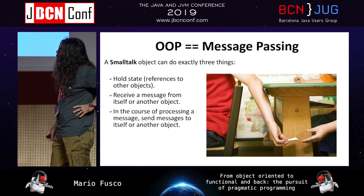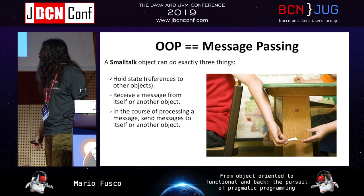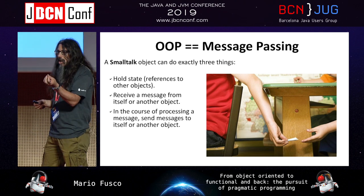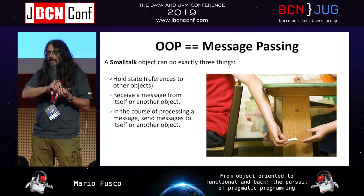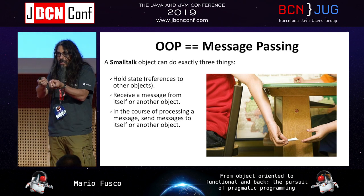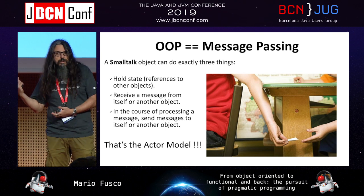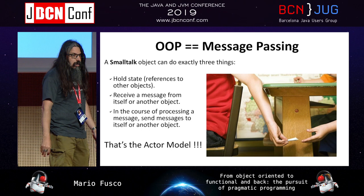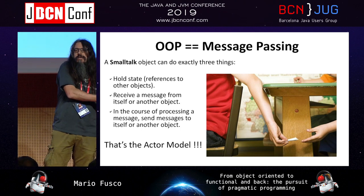Originally, object-oriented programming was something totally different. It was Smalltalk — if you know Smalltalk. The important thing here are the principles: you have an object that holds its own state, and an object cannot change the state of another object. An object can only communicate with other objects by sending a message, and while serving these messages, each object changes its own internal state. What is this? It's the actor model — if you know Erlang, if you know Akka, if you know Scala. Smalltalk is almost 45 years old, and it was the actor model.